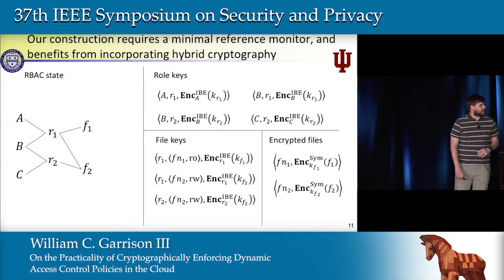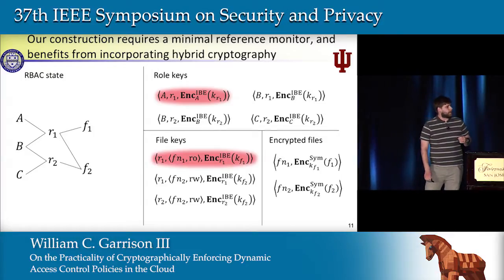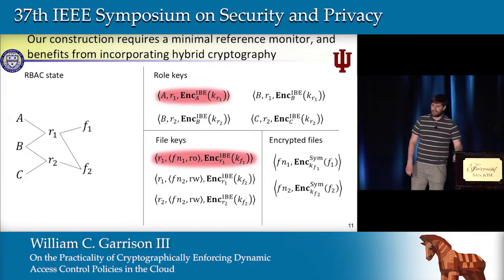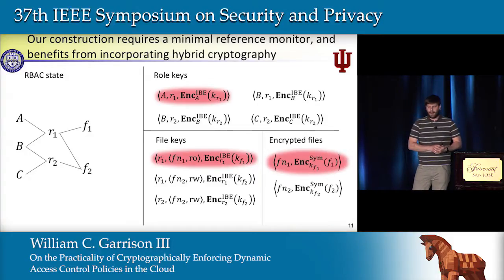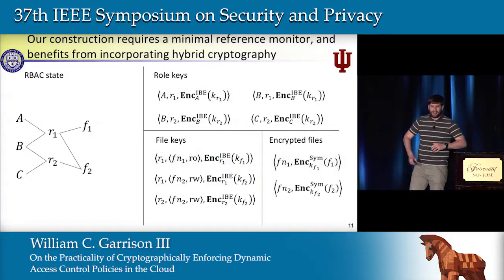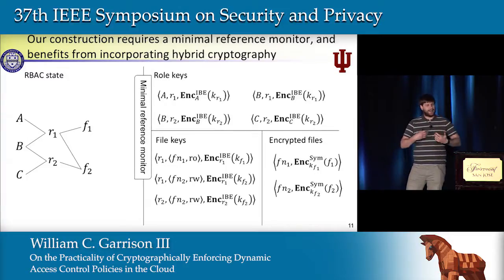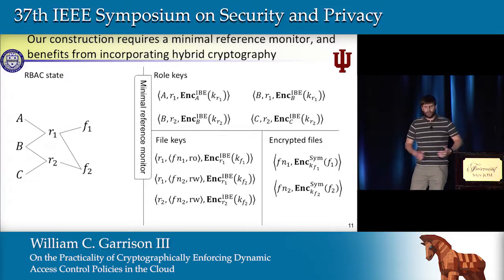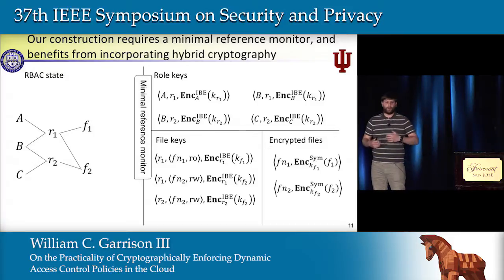If user A wants to access file 1, they first have to download the role key as before, use that role key to decrypt the symmetric key for that specific file, and use that symmetric key to decrypt the file. But by introducing a minimal reference monitor who's going to check some identity-based signatures—some IBS signatures—we can make sure that writes are only permitted if they are being done by a user who's a member of a role granted read-write permission to this file.